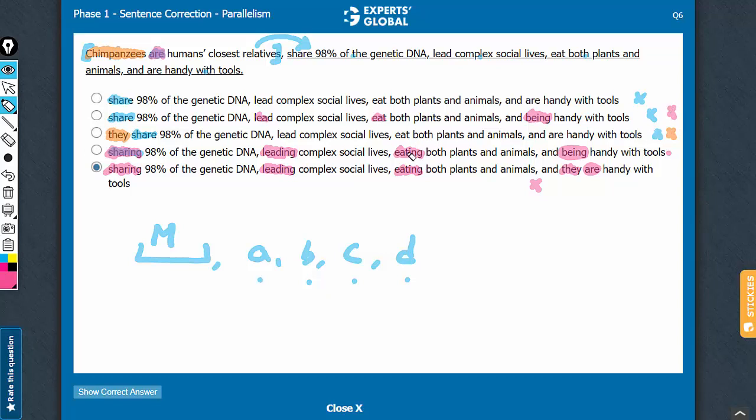Only choice d is left. Let's confirm it. So, the main clause here with the verb are and choice d breaks the parallelism where it must, sharing, so that the main clause is not parallel to the subordinate phrases. First phrase, sharing something. Second phrase, leading something. Third phrase, eating something. And fourth phrase, being something.